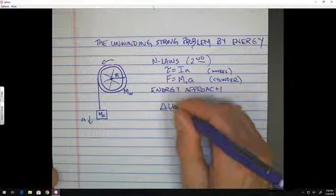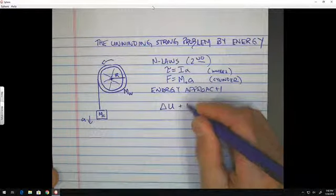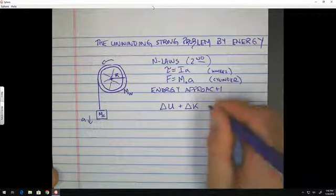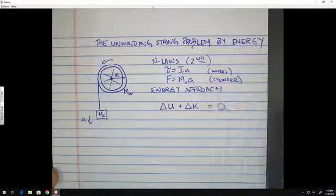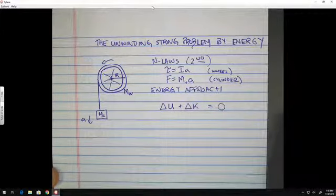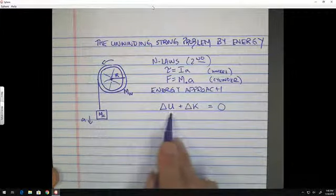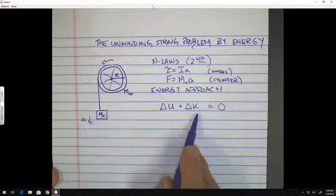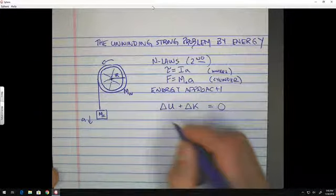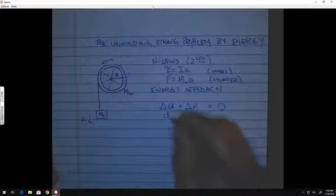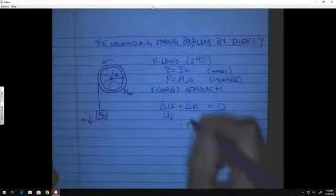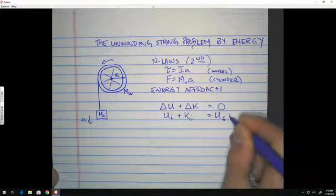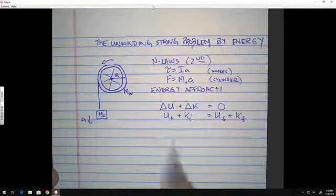So if we can make that assumption, then any changes in potential energy plus any changes in kinetic energy should be adding up to zero. So if there's a decrease in potential energy, which is going to be the case here, then there should be a corresponding increase in kinetic energy. So this usually leads us to something like this where it says potential initial plus kinetic initial is equal to potential final plus kinetic final. So separating out those terms.